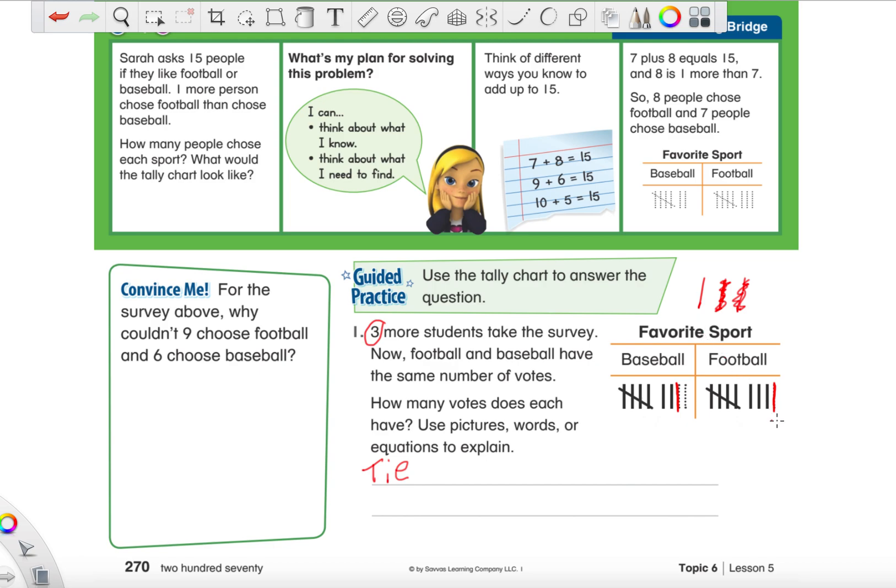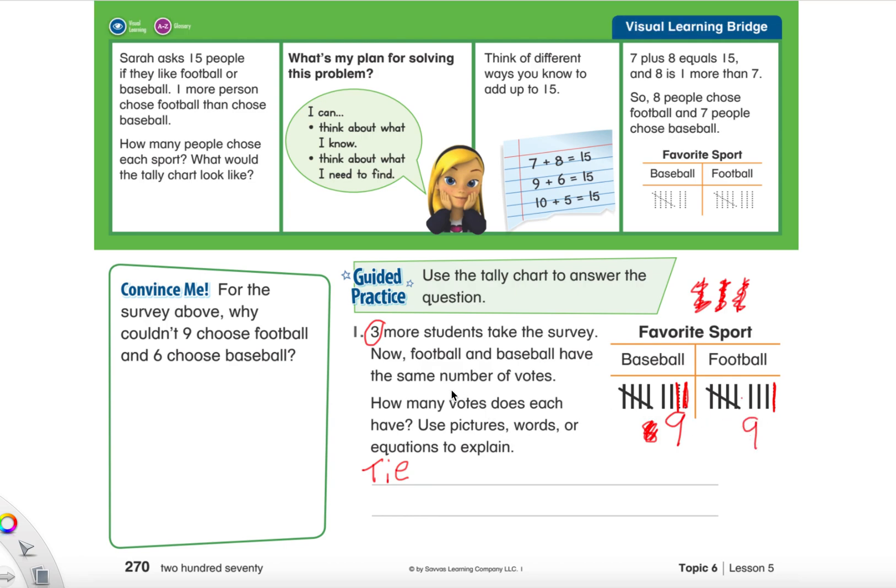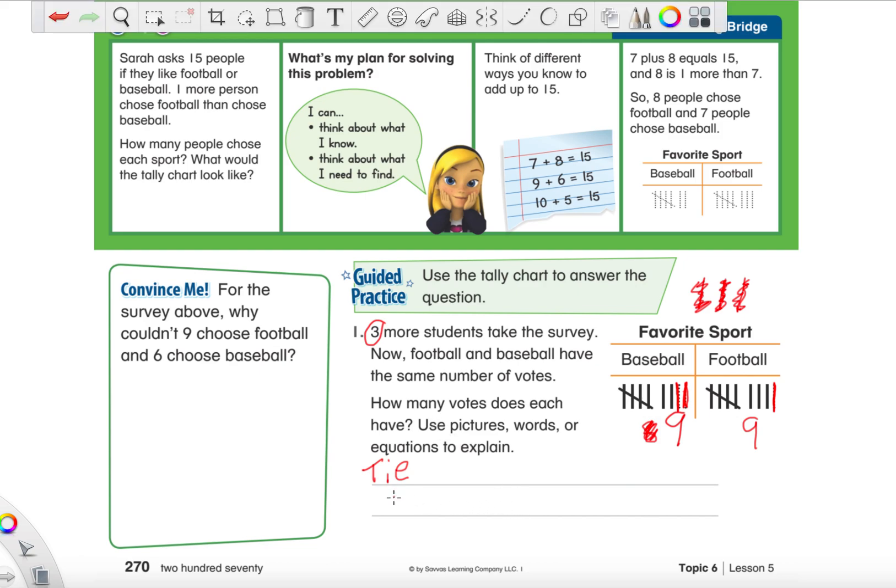But which side do we go on? Well, if we look now, this side now has five, six, seven, eight, nine. And the baseball side says, let's see, five, six, seven, eight. It only is eight. So if we have eight over here and nine over here, where's this last tally mark going to go? Because we have to make sure we have the same number on both sides. Well, it's got to go with the smaller number, right? With the eight. So I'll draw here and cross it out up top. Now I have nine for baseball and nine for football. And that answers the question, how many votes does each have now? Well, I'll write down here. They both have nine.